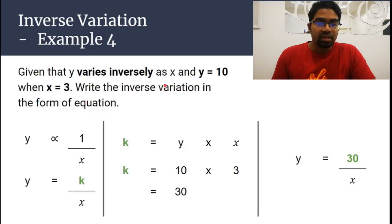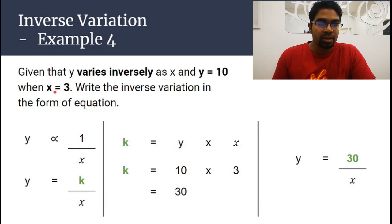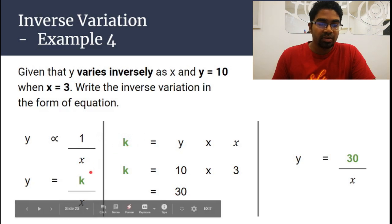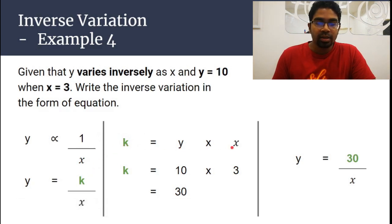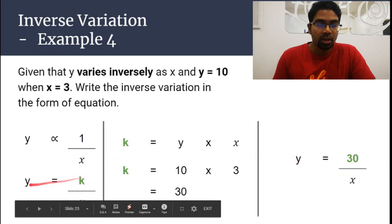Example: given that y varies inversely as x, and y is 10 when x is 3, write the inverse variation in the form of an equation. First we write the relationship — it's an inverse variation — then convert it into an equation: y equals k over x. Rearranging gives k equals y times x. Substituting y = 10 and x = 3, we get k = 30. Substituting back, y equals 30 over x.